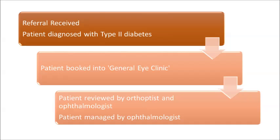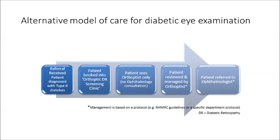In the next example, you'll see a slightly different model — an orthoptist-led clinic where the orthoptist assesses and manages the patient. A referral of a patient diagnosed with type 2 diabetes is received. The patient is booked into the orthoptic diabetic retinopathy screening clinic. The patient sees the orthoptist only — there is no ophthalmology consultation. The patient is reviewed and managed by the orthoptist based on a specific protocol, such as the NH&MRC guidelines or a specific departmental protocol. The patient is then referred to an ophthalmologist based on that protocol.